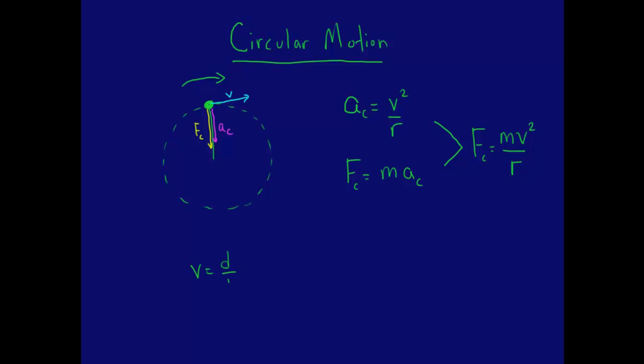The velocity of any object is distance divided by time. For an object moving in a circle, this is the same as circumference divided by time. Circumference is 2 pi r. Therefore, the equation for velocity of something moving in a circle is 2 pi r divided by time.